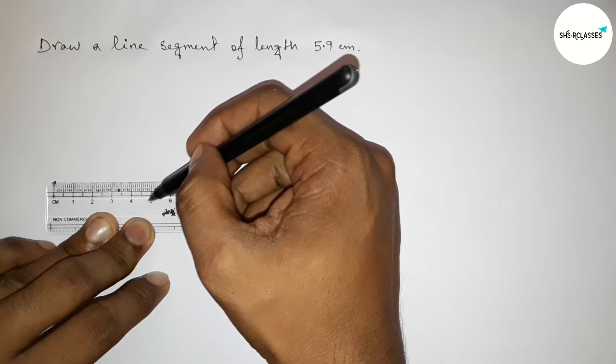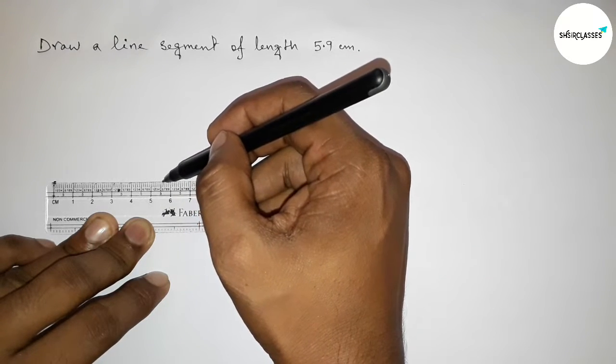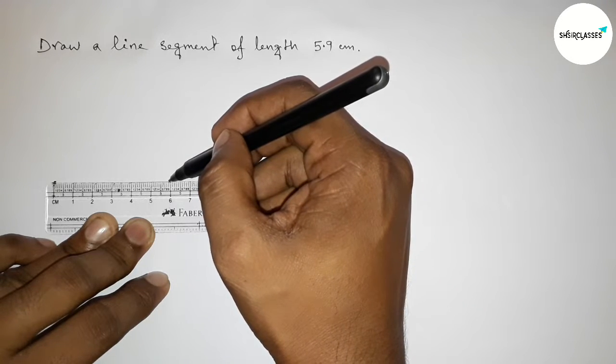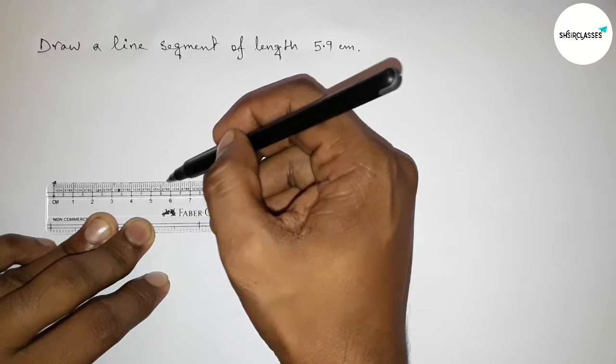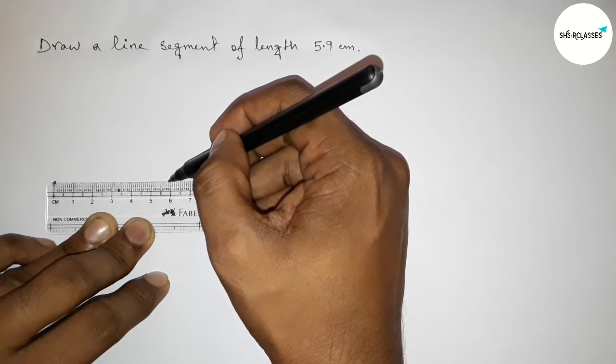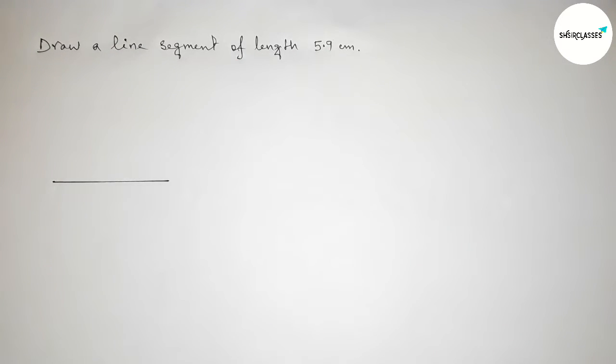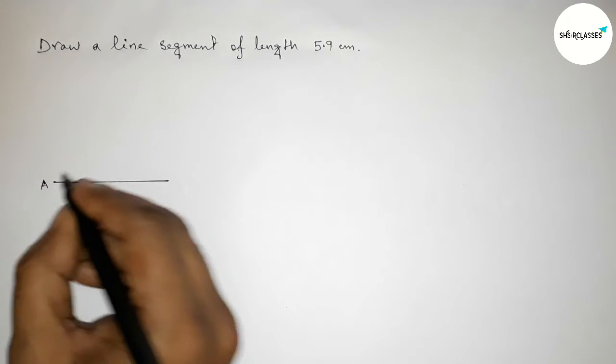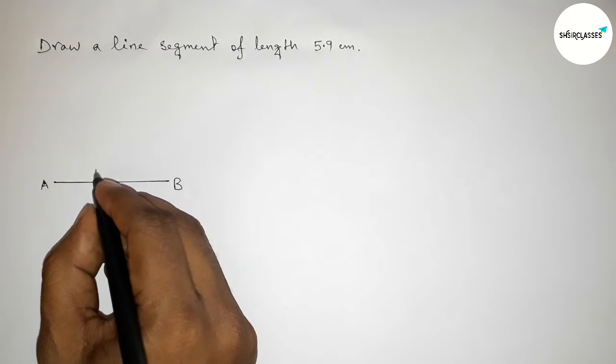Four centimeter, five centimeter. This is 5.5, six, seven, eight, nine. So after 5.5 we have to count four extra, so this is 5.9 centimeter length. Joining this line, taking here A and here B, so AB